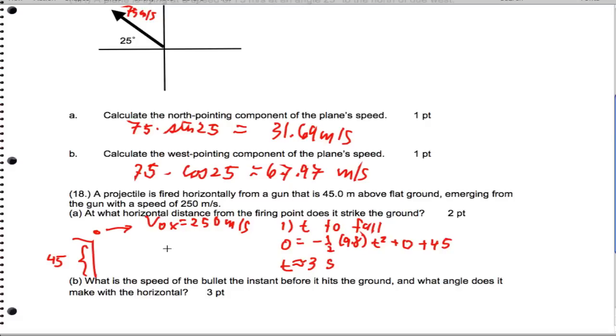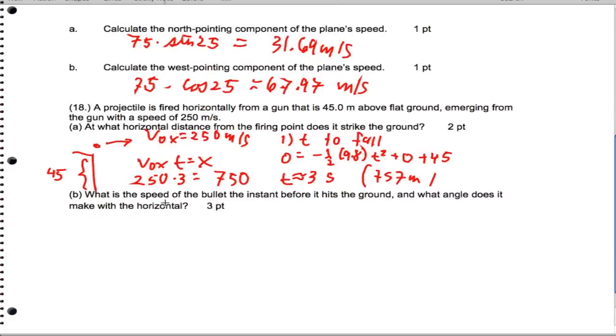When we want to get the horizontal distance, we're going to get v naught x times t equals x. So we're going to get 250 times 3, which is going to be about 750 meters. I think with all the rounding and things, you might have got something like 757 meters. That works too.